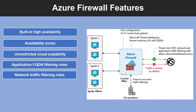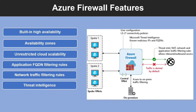Azure Firewall is fully stateful, so it can distinguish legitimate packets from different types of connections, and these rules are enforced and logged across multiple subscriptions and virtual networks. Another feature is threat intelligence. Threat intelligence-based filtering can be enabled for your firewall to alert and deny traffic from or to known malicious IP addresses and domains. The IP addresses and domains are sourced from the Microsoft threat intelligence feed.